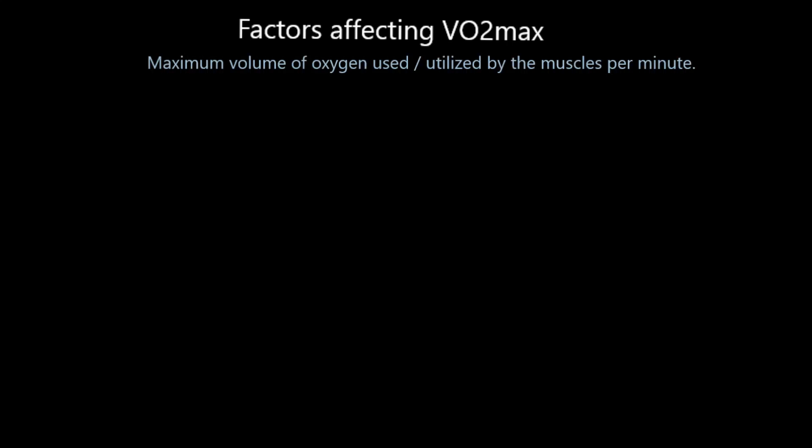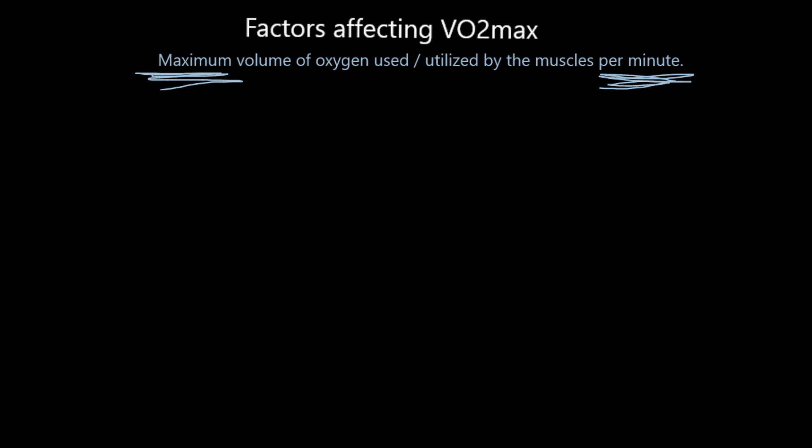VO2max is the maximum volume of oxygen used or utilised by the muscles per minute. The bits people always forget is that it's the maximum, and that it's per minute. You won't get away with saying per unit of time. Please make sure you put that it's the maximum volume of oxygen used or utilised by the muscles per minute.